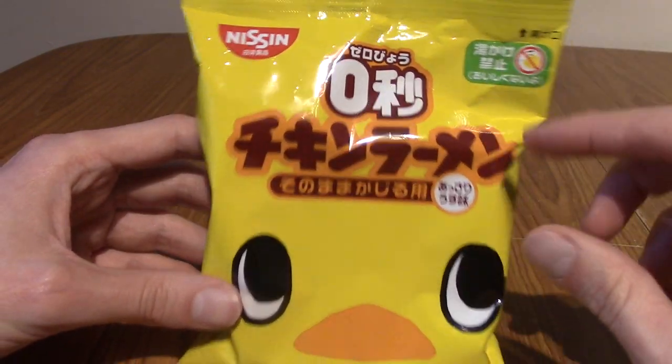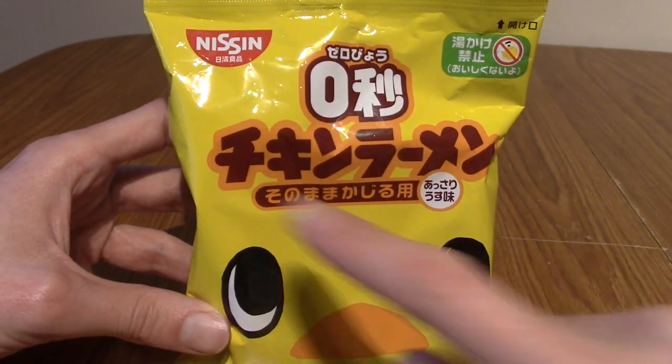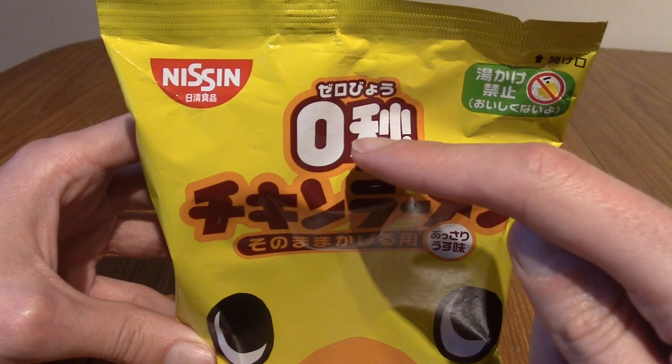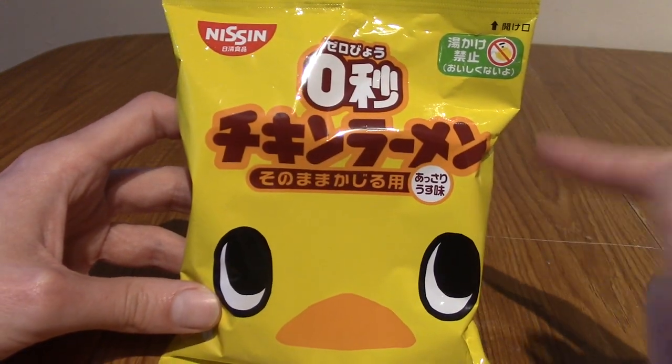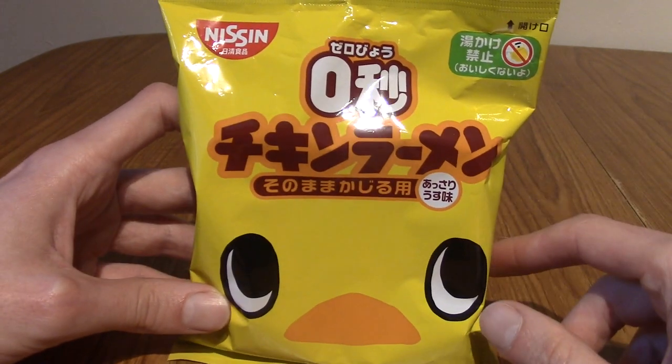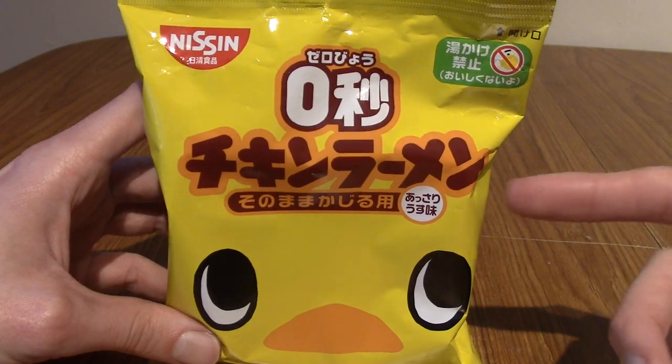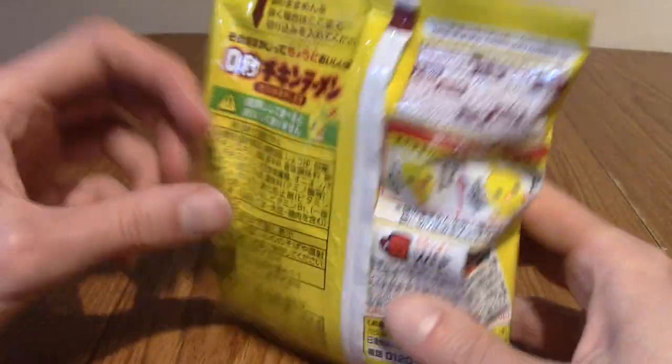And today we are starting off with a really curious one. This is Chicken Ramen, as you can see there. There's a conspicuous zero there. Now I've used Google Lens and this got me very interested. So I was about to boil the kettle, get ready to cook some chicken ramen, and then I translated some of this stuff.